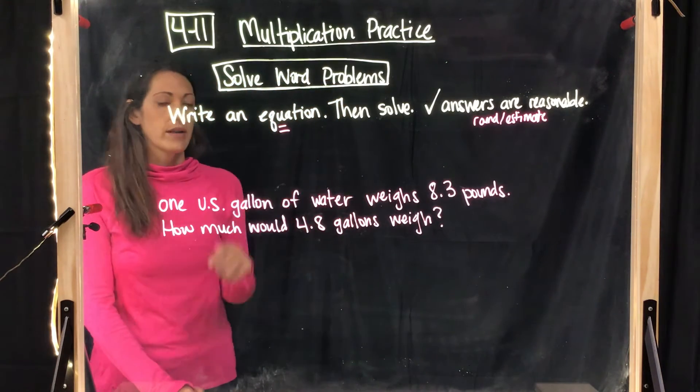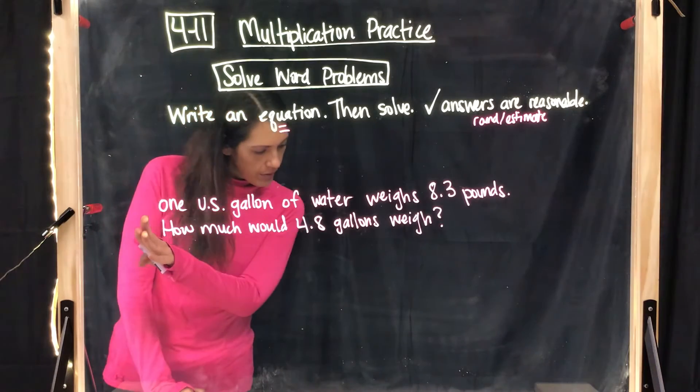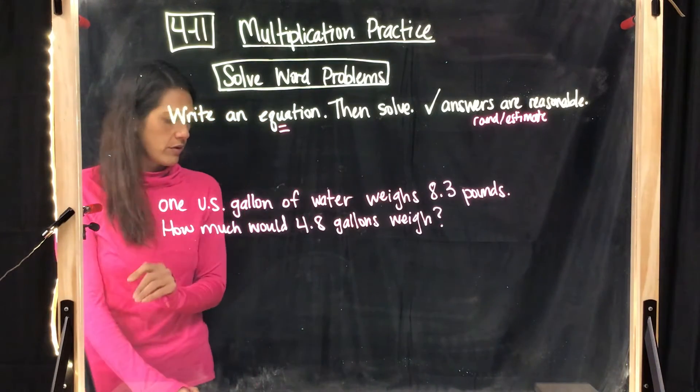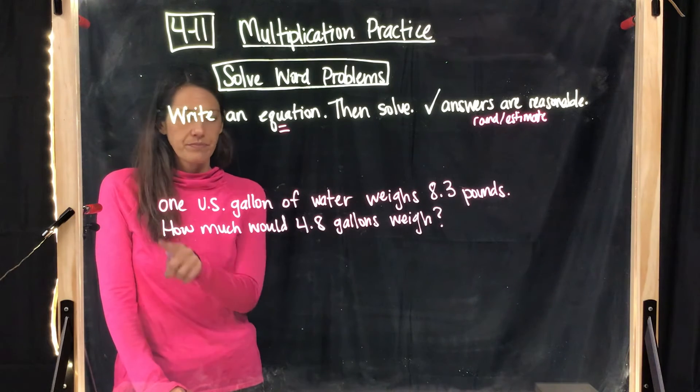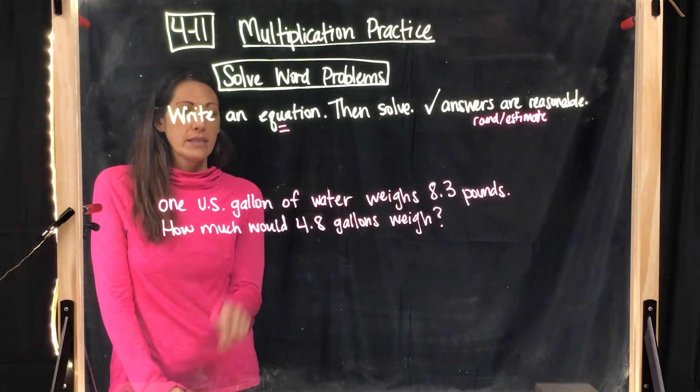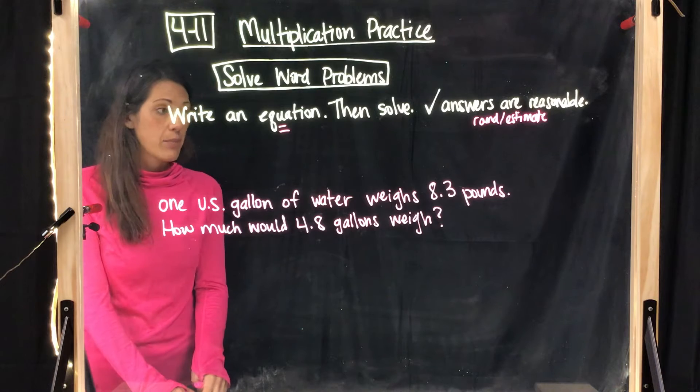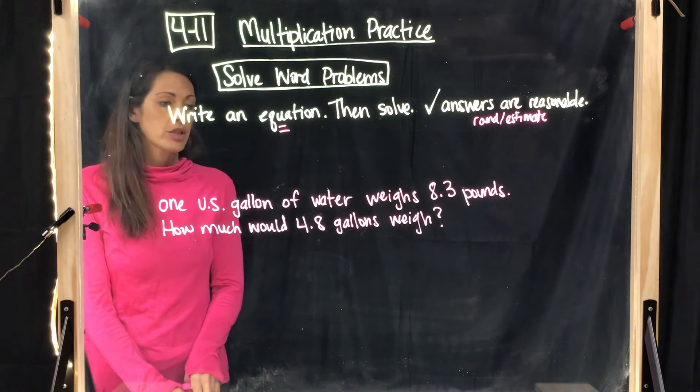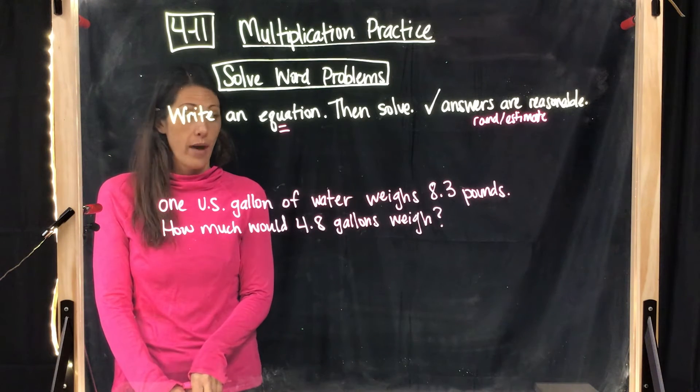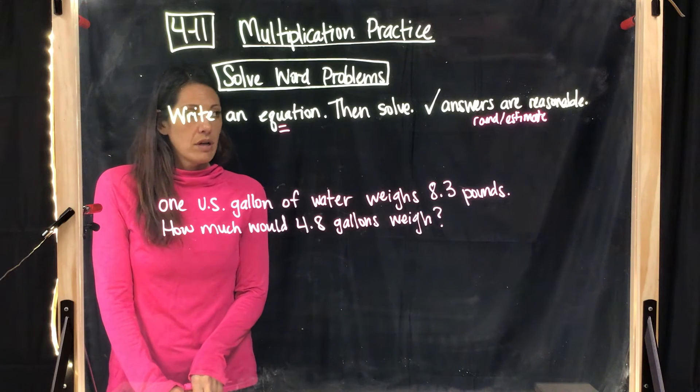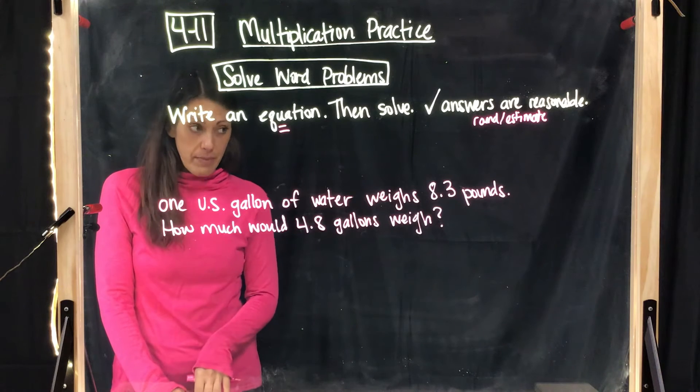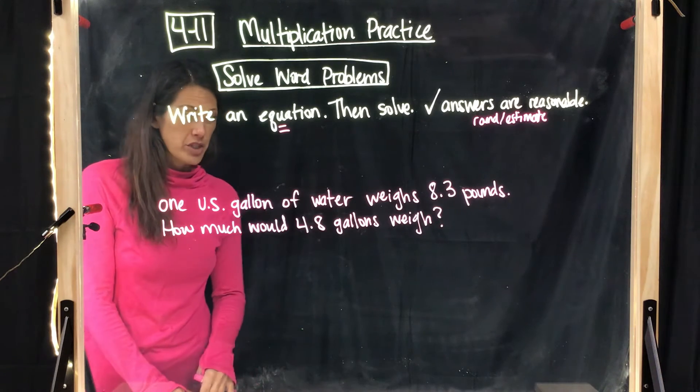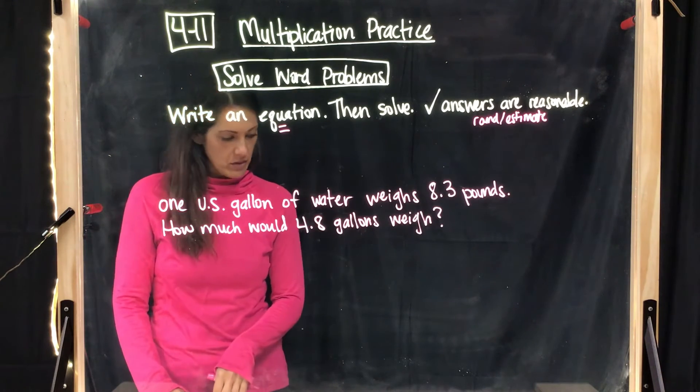The first thing is, let's write an equation. So I took number 25 on your workbook page 152. We're going to go through this problem together. One U.S. gallon of water weighs 8.3 pounds. How much would 4.8 gallons weigh? So I have to write an equation.